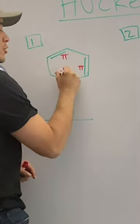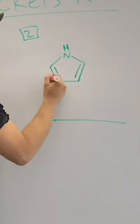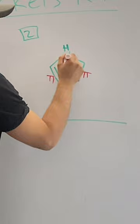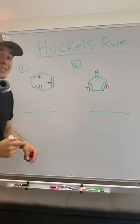So there's a pi bond here, pi bond here, pi bond here. Same thing over here. This is a conjugated species because of the lone pair that's present there.